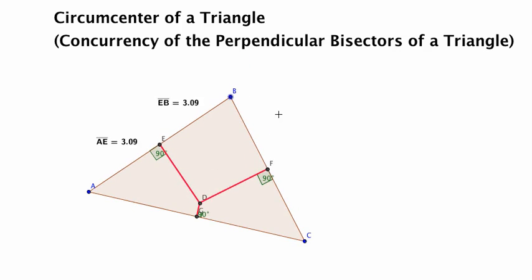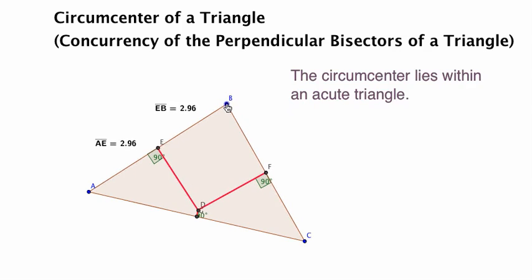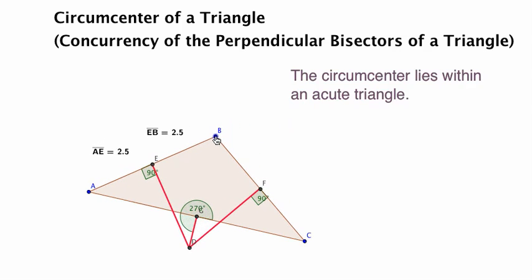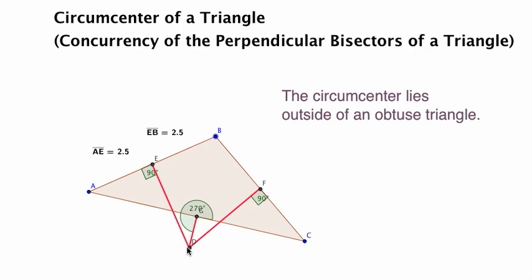So what are some of the properties of a circumcenter? Well, first of all, if you're talking about an acute triangle, which we have here, the circumcenter is always inside. But once you make this an obtuse triangle, this circumcenter goes outside of the triangle.